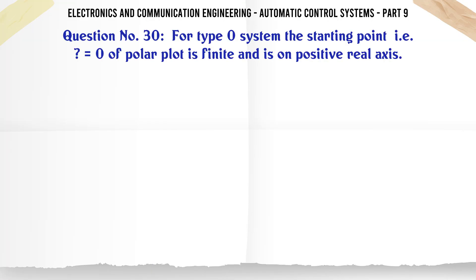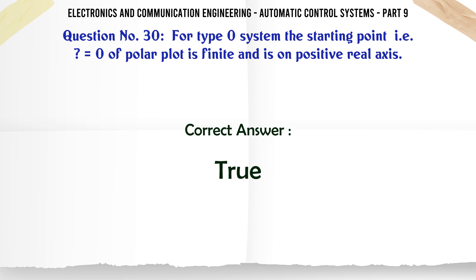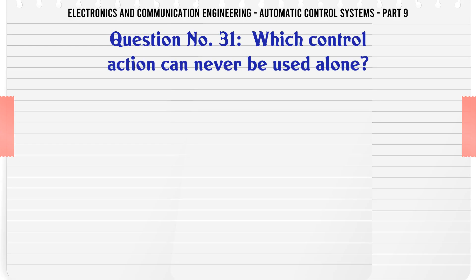For a type 0 system, the starting point (i.e., ω = 0) of the polar plot is finite and is on the positive real axis. A. True, B. False. The correct answer is: True.